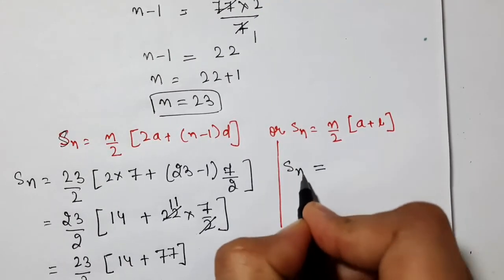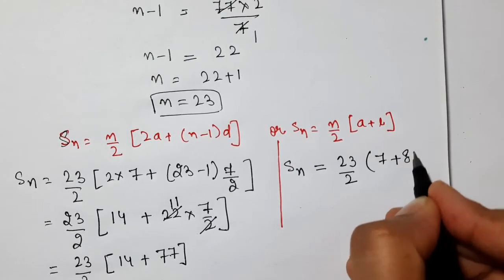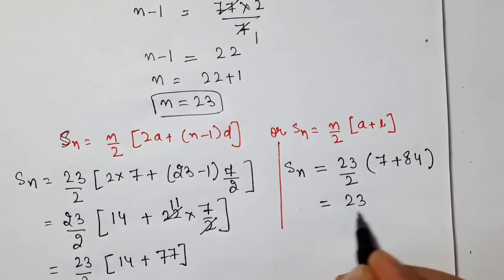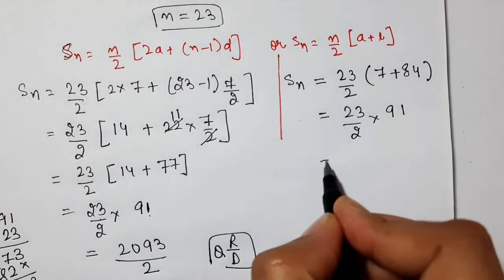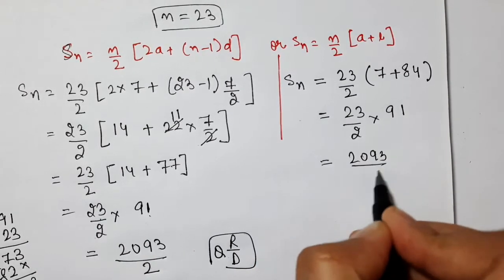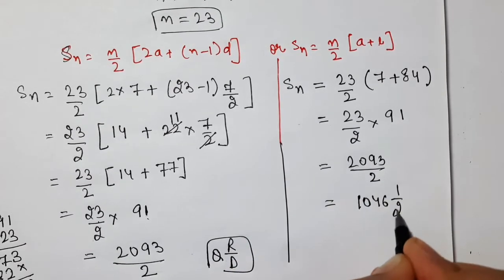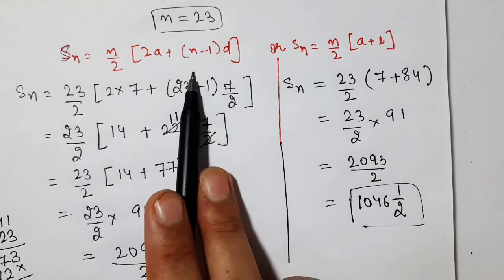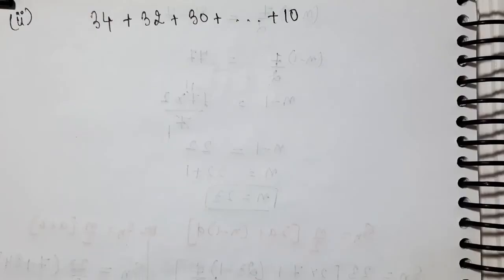So here we have 23 by 2 times 14 plus 11 times 7, which is 77. Adding these gives us 23 by 2 times 91. Now multiply these two numbers - cutting is not possible. Multiplying in rough: this is 3 then 27, then 2, 18. This becomes 2093 upon 2. So this is our answer.